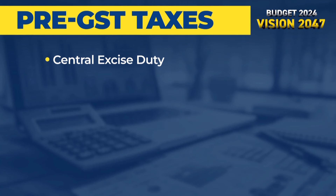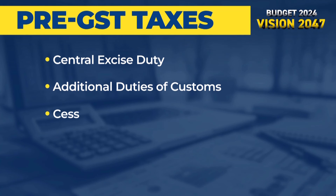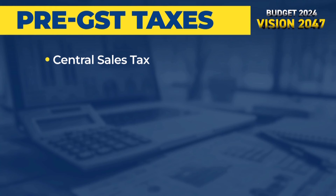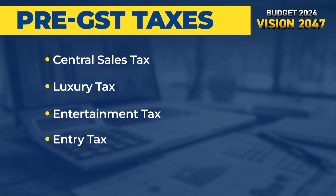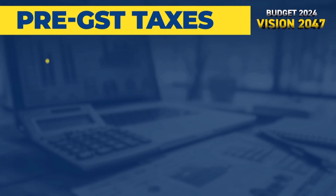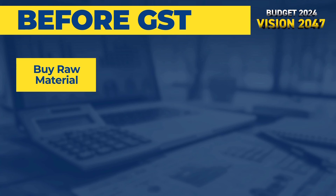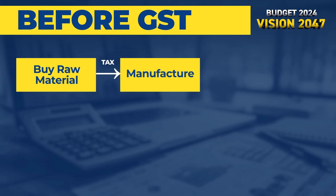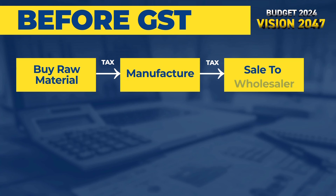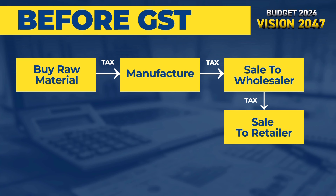GST has replaced value-added tax or VAT, excise duty and more, to create a simpler single-point taxation system. But how is GST different from the old taxation system? In the old system, tax was levied at every step of the way. The manufacturer, wholesaler, retailer and the consumer had to pay tax to complete the cycle.